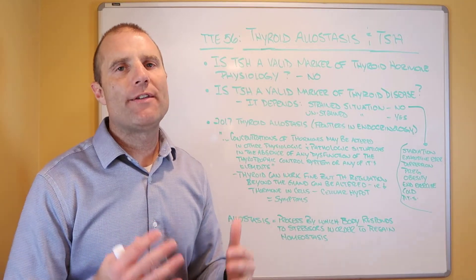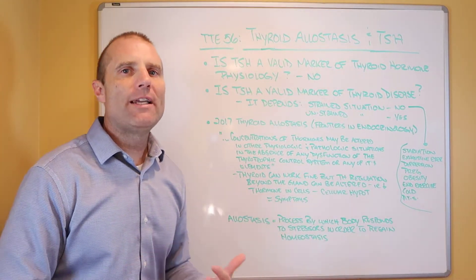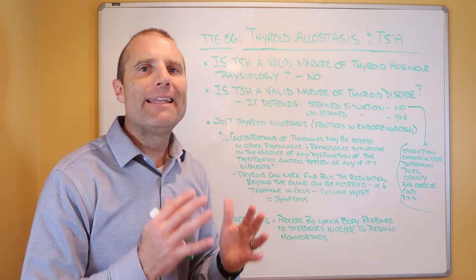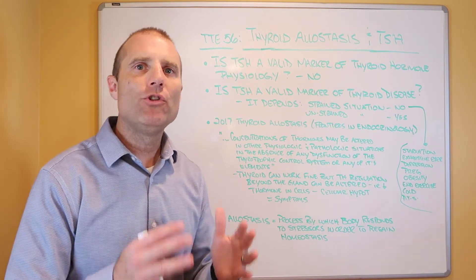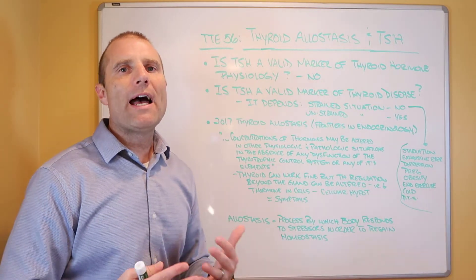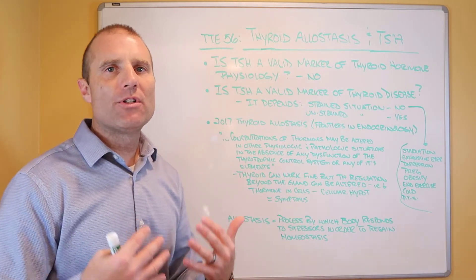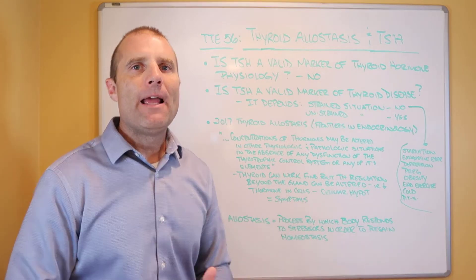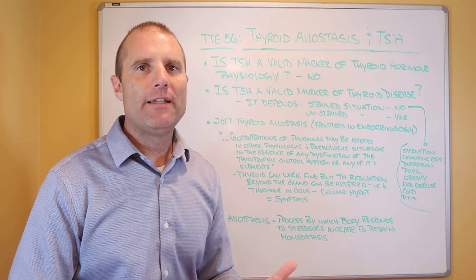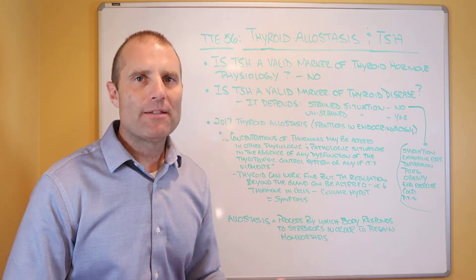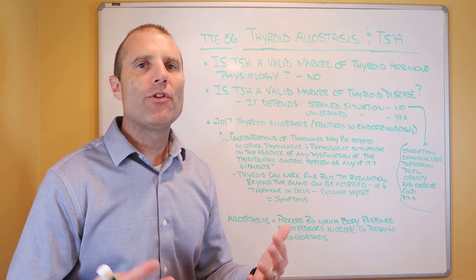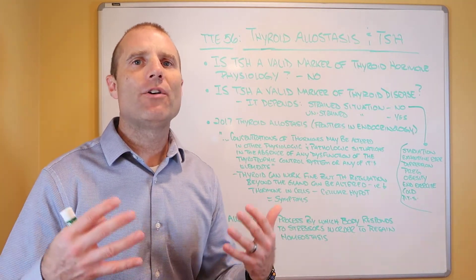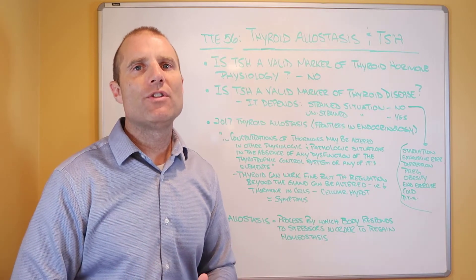So TSH in strained situations could be high, low, or normal. The gland may not be diseased, but you may be symptomatic. What we have to do is look at the person's history, look at the stressors in their life, look at a full comprehensive lab panel, and look at other indications of stress on the body — a comprehensive metabolic panel, maybe a GI stool test. All the testing needed to identify the stressors is really based on your timeline and history, and that's what a good physician should help you identify.